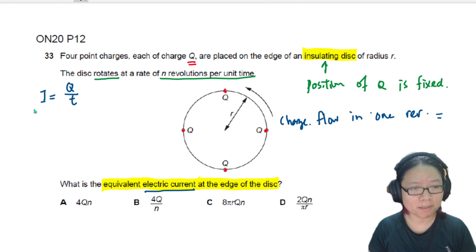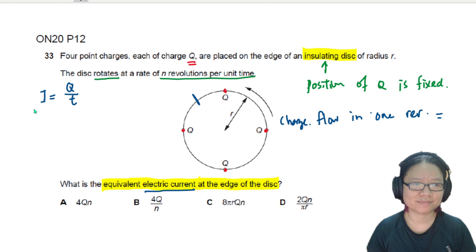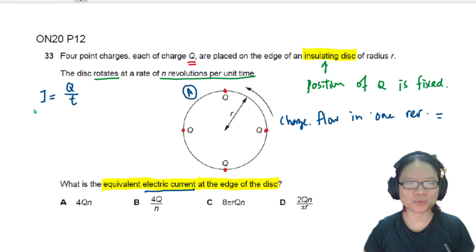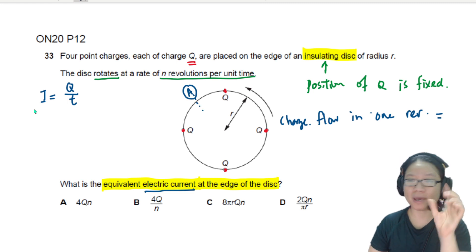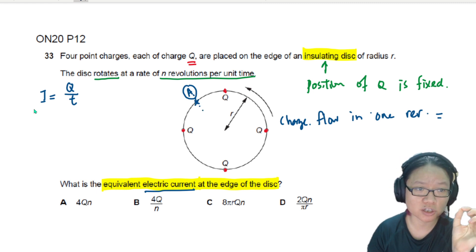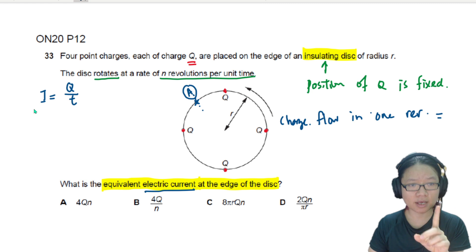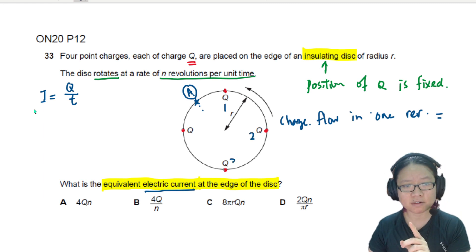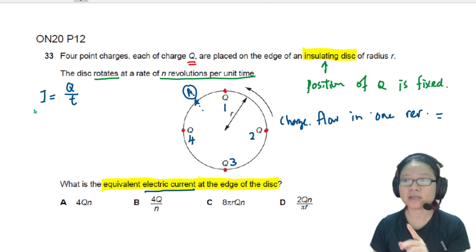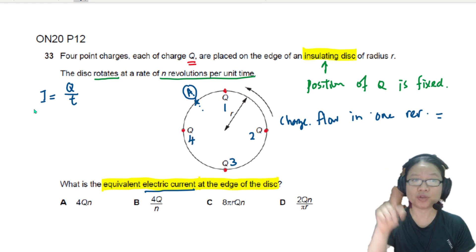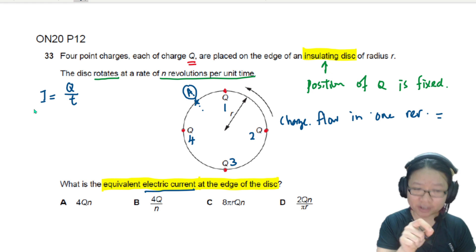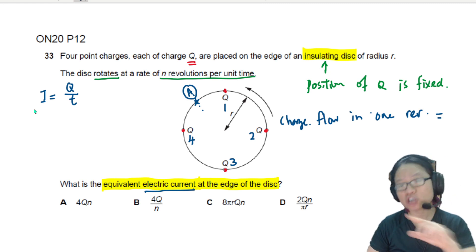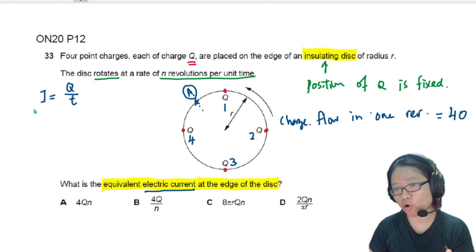Imagine you have your ammeter. Pretend I can connect an ammeter here. So when the ammeter pays attention to the charge that passes through this point in one cycle, this Q will pass through, followed by this, followed by this, and then this. So there are four Q that will pass through a given point along the disk. So the charge flow in one revolution is 4Q.